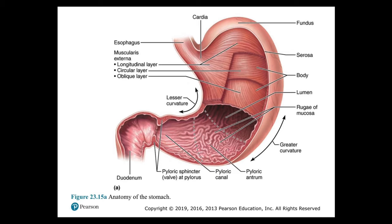The pylorus is the curve of the J shape, divided into a pyloric antrum connected to the body and a pyloric canal emptying into the duodenum. As mixing movements occur during digestion, the pylorus frequently changes shape. The pyloric sphincter or valve regulates the release of chyme into the duodenum. Glands in the pylorus secrete mucus and important digestive hormones including gastrin, which stimulates the activity of gastric glands.